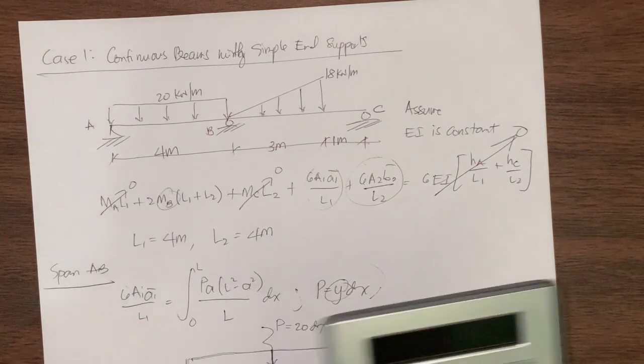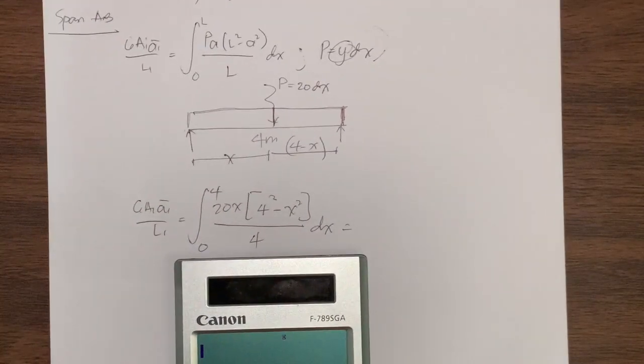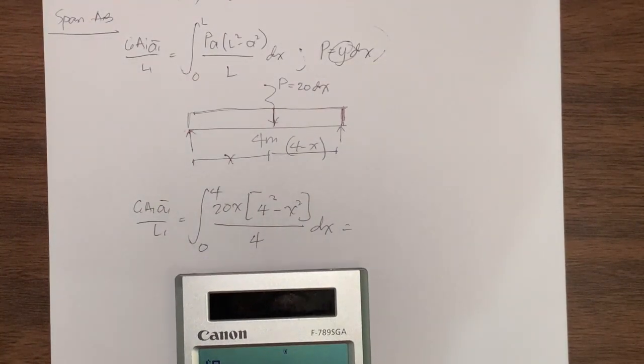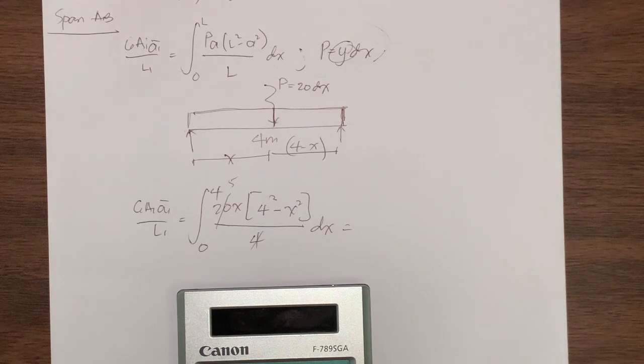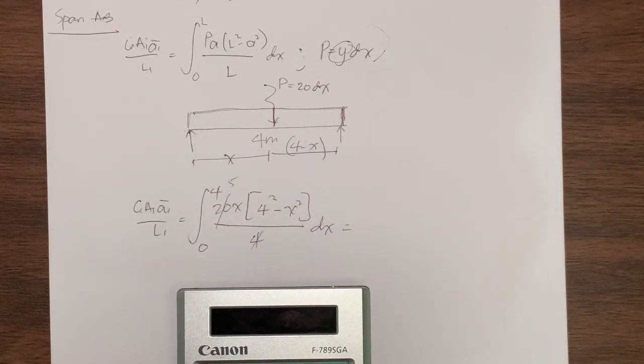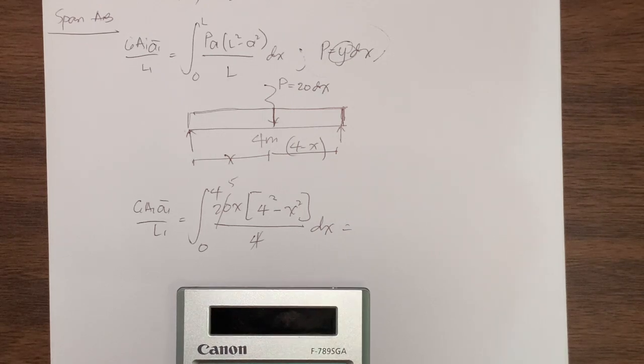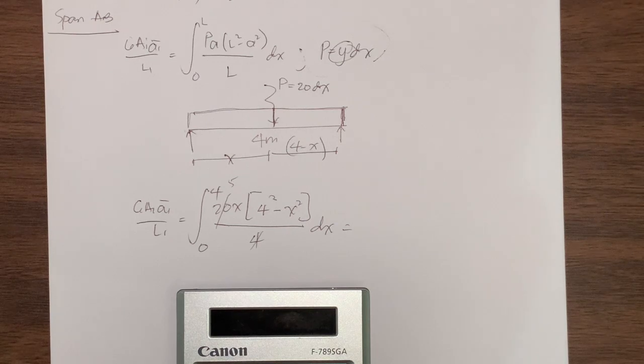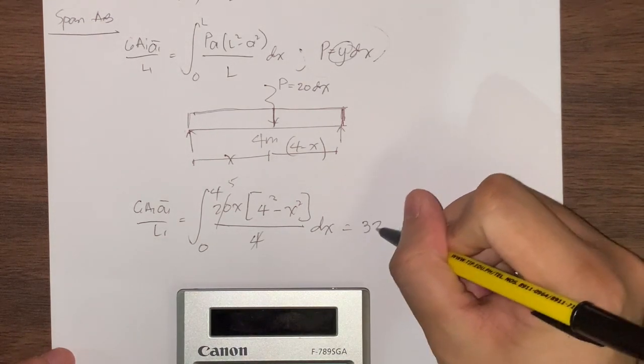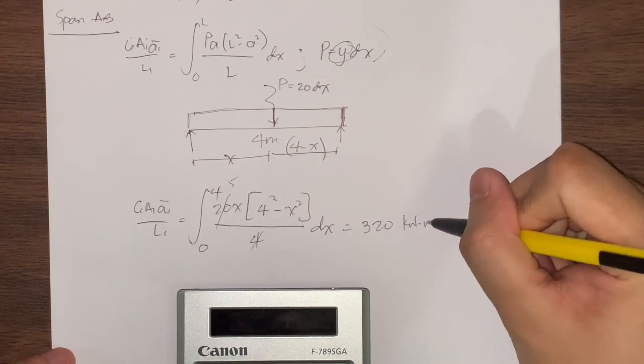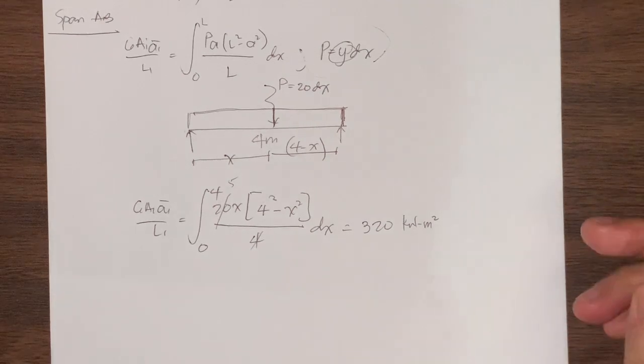Let's use our calculator. We have the integral of 5 times alpha x times 4 squared minus alpha x squared. The limit is from 0 to 4. So this is 320 kilonewton meters squared.